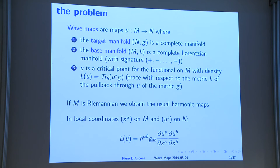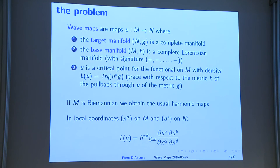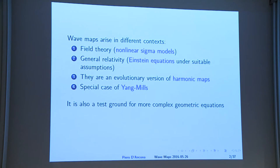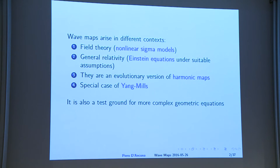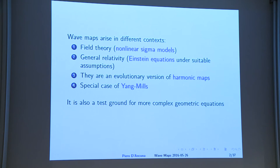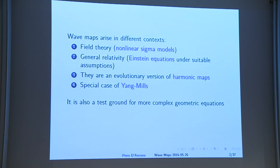This is a very natural generalization of the harmonic map equation, but of course rather different. They pop out in several different theories, including general relativity under the assumption of the existence of some Killing fields. You get wave map equations in some dimensions.